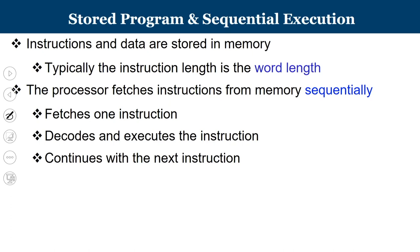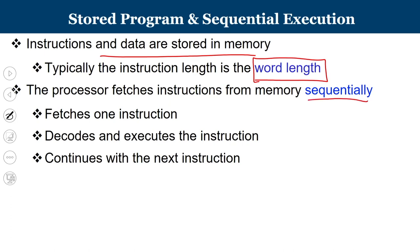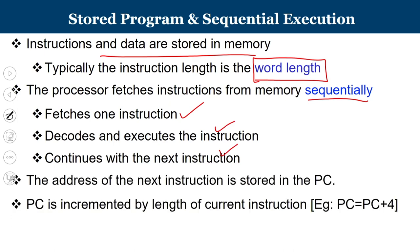Instructions and data are already stored in memory. Typically, instruction length is known as word length. In some microprocessors all instructions are of uniform length; in others, instructions are of variable length. The processor fetches instructions from memory sequentially — fetch, decode, execute, then move to the next instruction. The address of the next instruction is stored in the program counter.